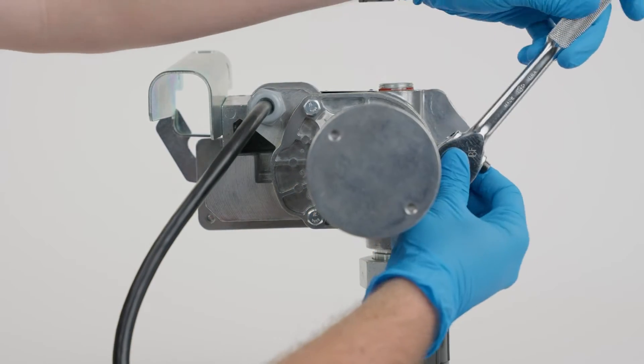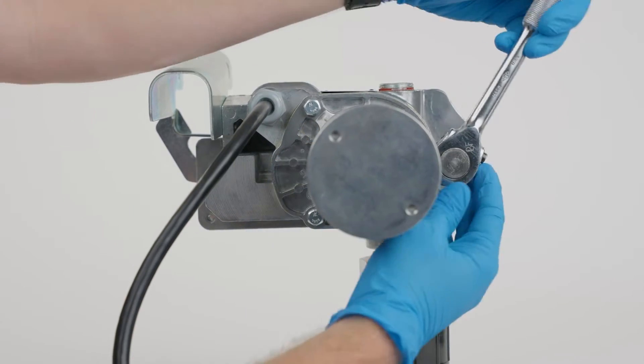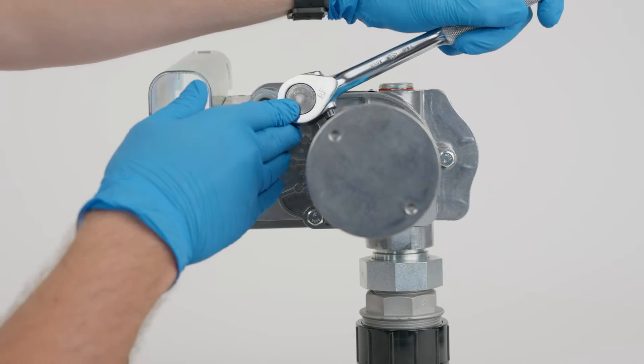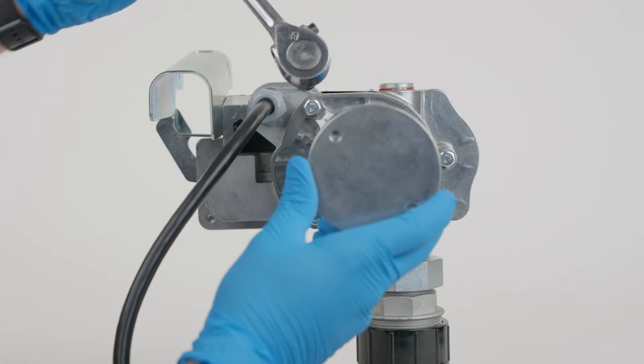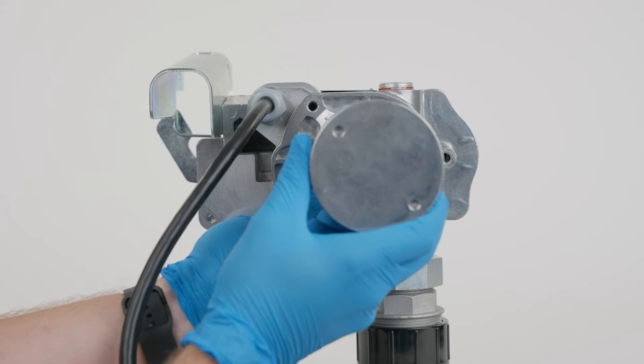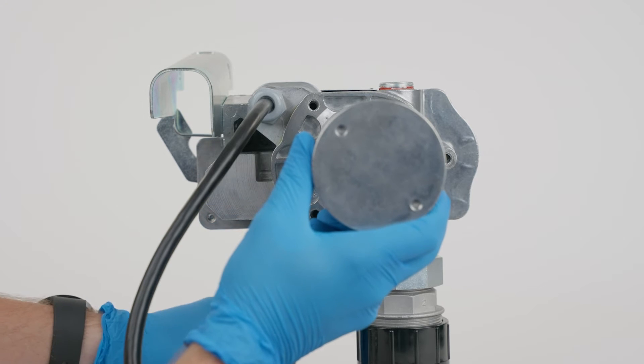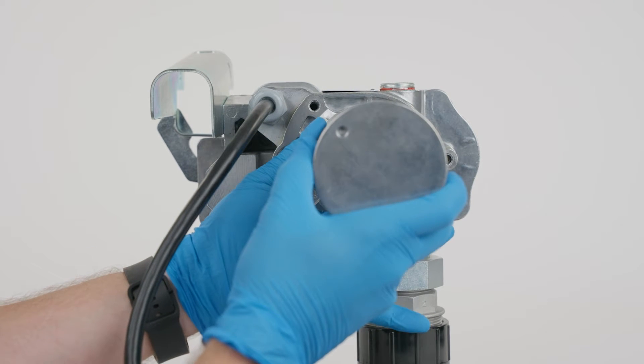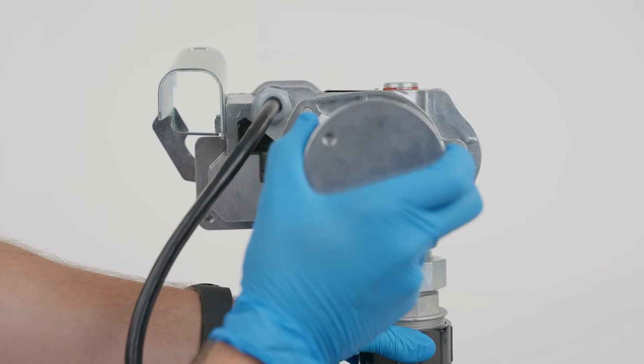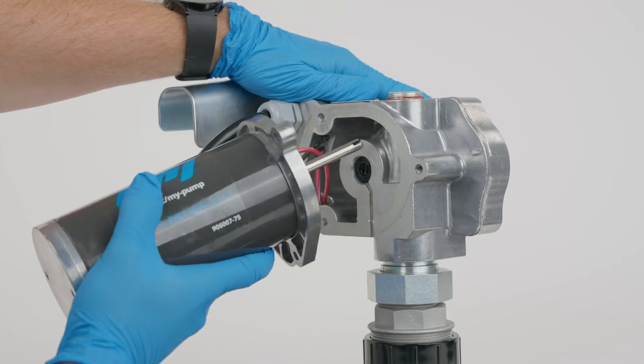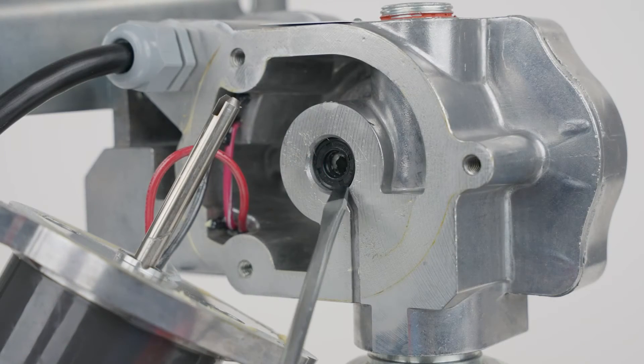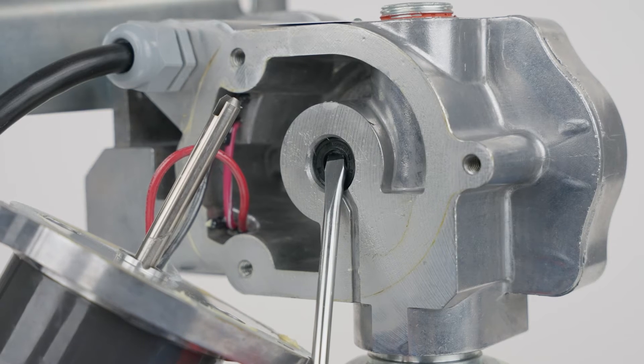Next, remove the screws and motor from the rear of the pump housing. Then remove the motor shaft seal with the socket wrench using a small screwdriver.